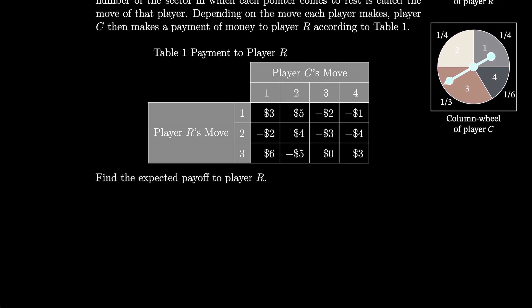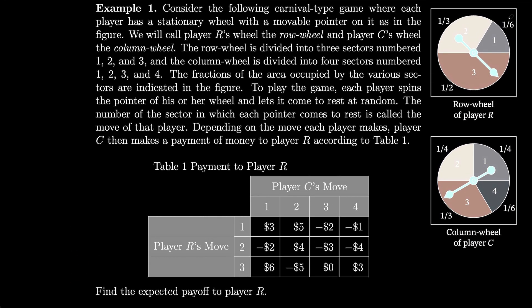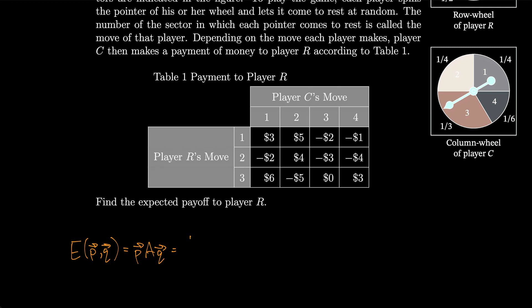We'll use the formula: E(PQ) = P times A times Q. For P, we have the row matrix [1/6, 1/3, 1/2]. Then we multiply by A, which is the matrix: [3, 5, -2, -1; -2, 4, -3, -4; 6, -5, 0, 3]. Then we multiply by Q, the column vector [1/4, 1/4, 1/3, 1/6].